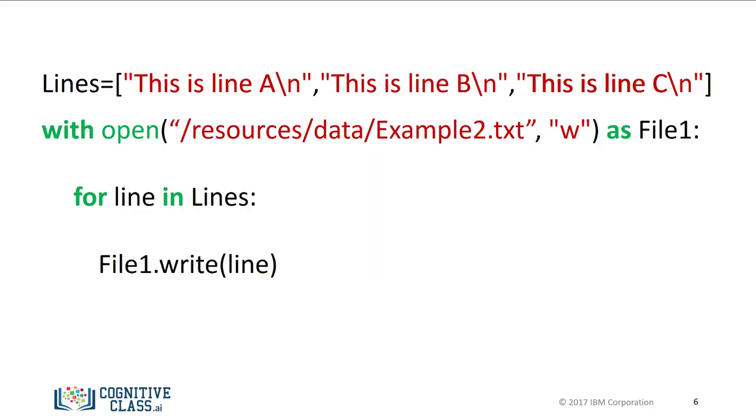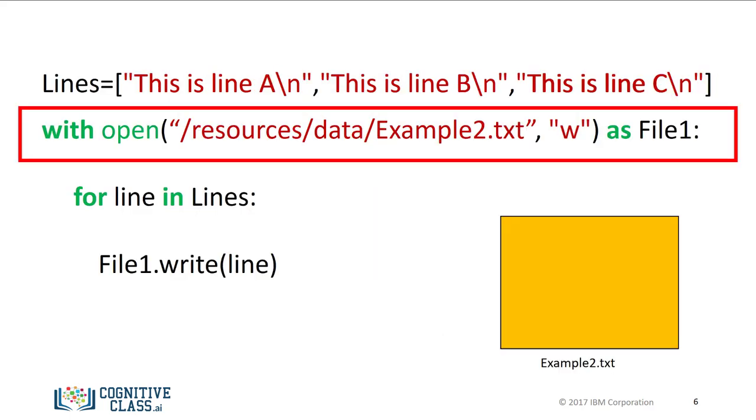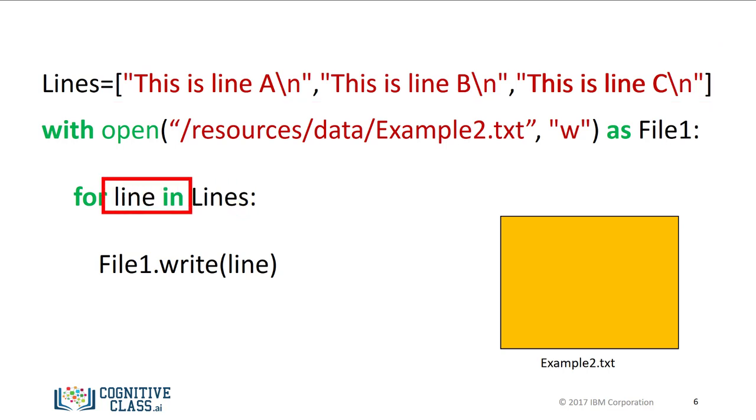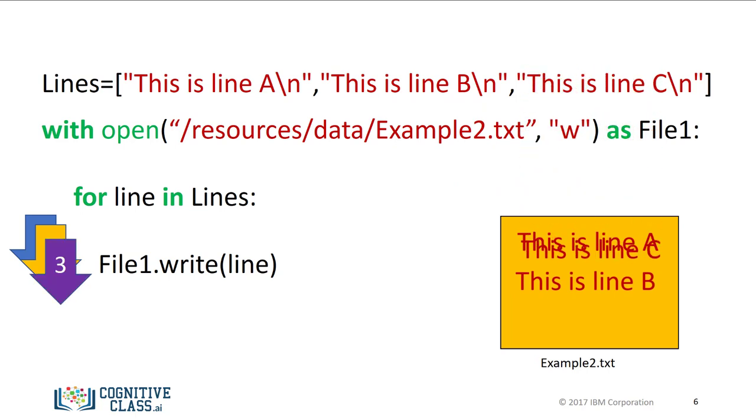We can write each element in a list to a file. As before, we use a with command and the open function to create a file. The list lines has three elements consisting of text. We use a for loop to read each element of the list lines and pass it to the variable line. The first iteration of the loop writes the first element of the list to the file example2. The second iteration writes the second element of the list, and so on. At the end of the loop, the file will be closed.